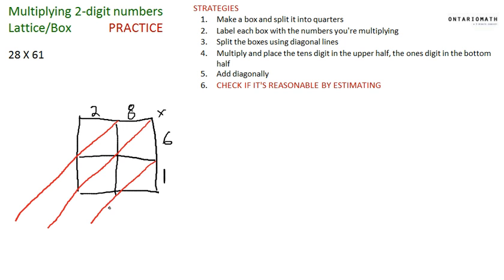It divides it up evenly into the appropriate place values so I don't have to worry about placeholders and putting zeros in spots. Now I just go through: 2 multiplied by 6 is 12, so 1 ten and 2 ones. 2 multiplied by 1 is 2. 8 multiplied by 6 is 48, and 8 multiplied by 1 is 8.